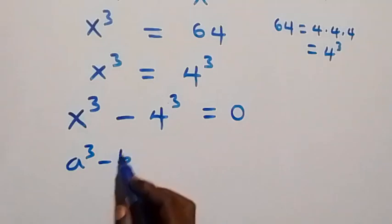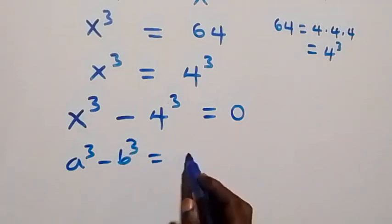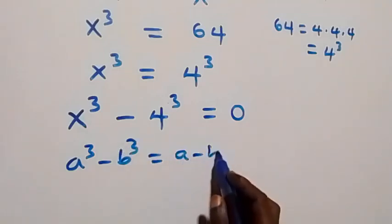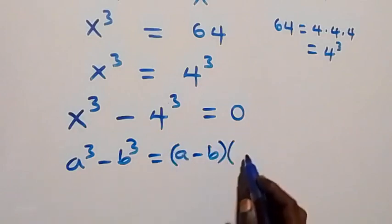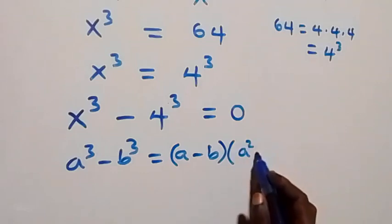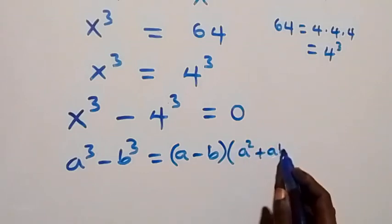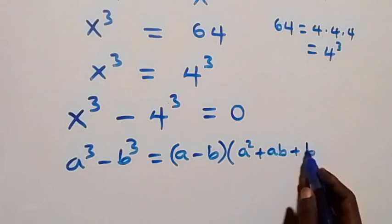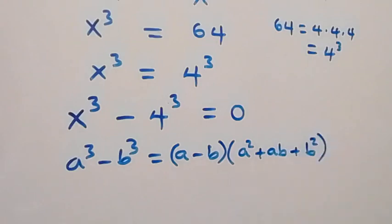This follows from the difference of two cubes formula: a cubed minus b cubed equals (a minus b) times (a squared plus ab plus b squared).